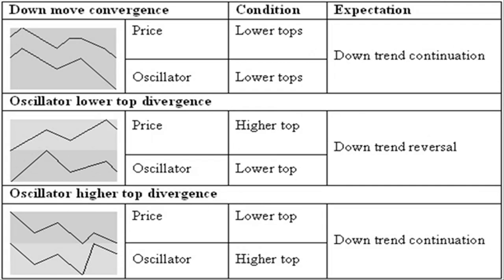Looking at the highs of the oscillator and comparing them with highs in price, you can see three other situations. When the price and oscillator make equal or lower tops, they converge. Until there is no other indication, the most probable price move is a continuation of the downtrend. When the oscillator makes a lower top while price makes a higher top, they diverge. This is mostly found at the end of an uptrend, indicating a downtrend reversal.